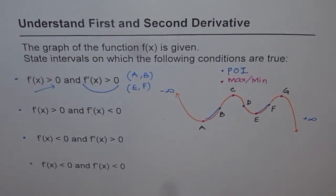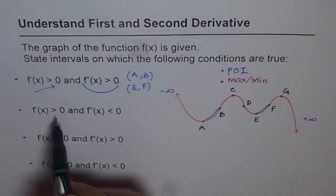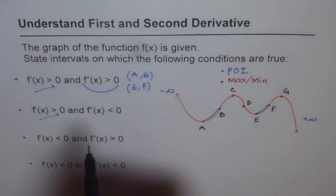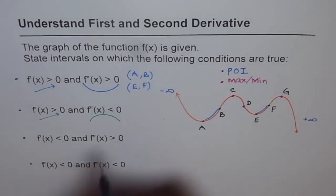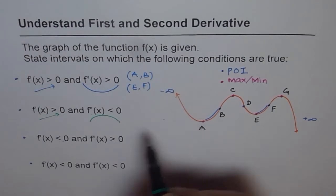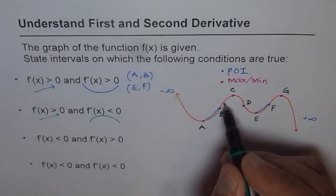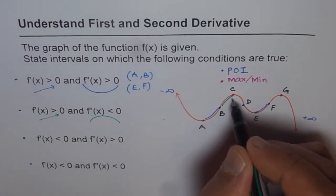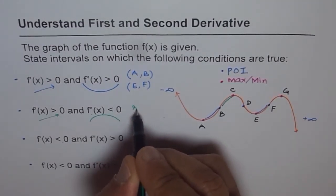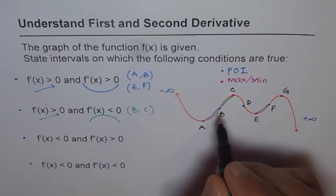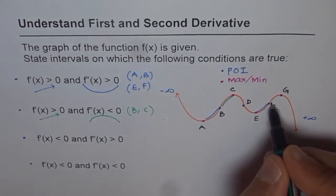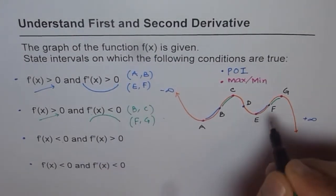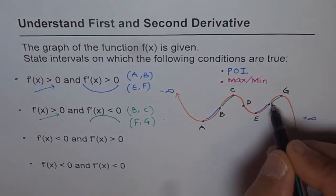The next condition: f'(x) is positive, meaning the graph is increasing, and f''(x) is negative, meaning it is concave down. We need a portion that is increasing and concave down. That gives us B to C — it is concave down and increasing. Then also increasing and concave down from F to G. So our answers for this condition are B to C and F to G.